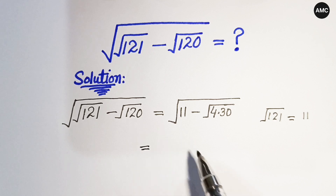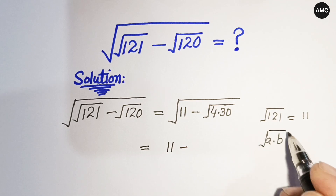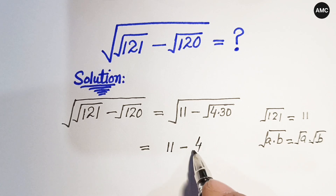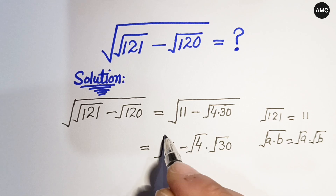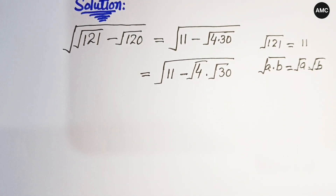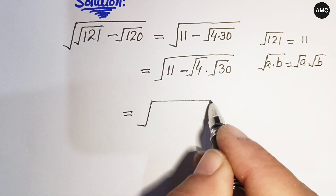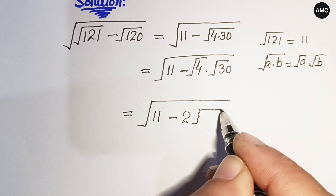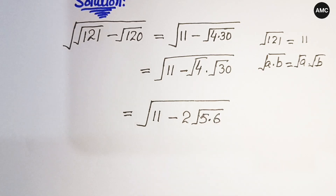Now we apply the exponential property: if we have √(a times b), it is equal to √a times √b. So √(4 times 30) can be written as √4 times √30. Our next step gives us the square root of (11 minus √4 times √30). Since √4 equals 2, and 30 can be written as 5 times 6, we proceed from there.